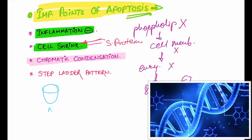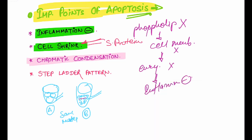The third point is chromatin condensation. To illustrate: if we have bucket A with big-sized balls and bucket B with small-sized balls, both have the same material but small-sized balls have tighter packing, occupying less space. Similarly, when nucleic acid is broken into smaller fragments, they occupy less space — this is a hallmark feature of apoptosis called chromatin condensation.